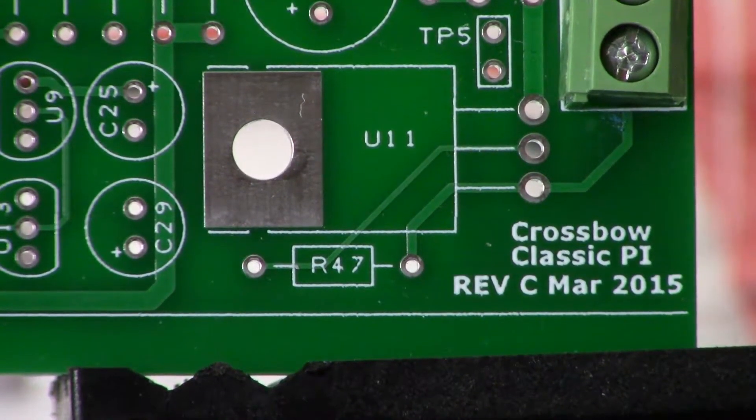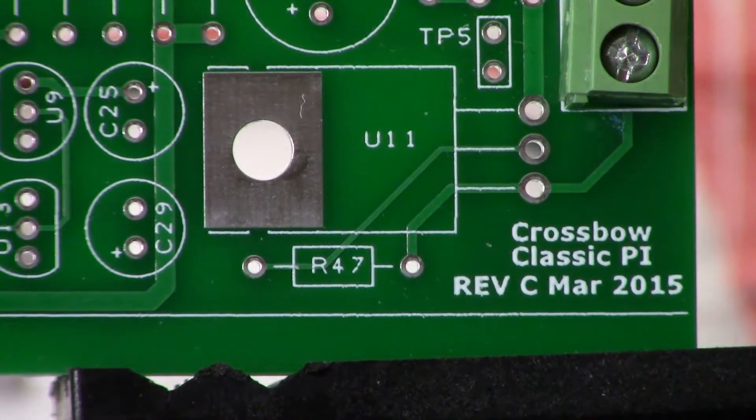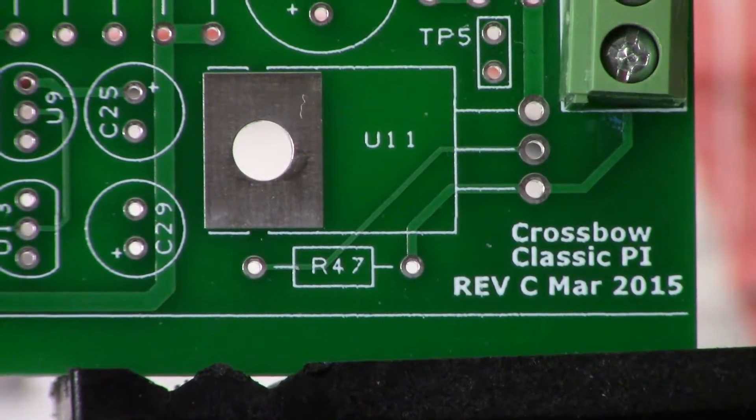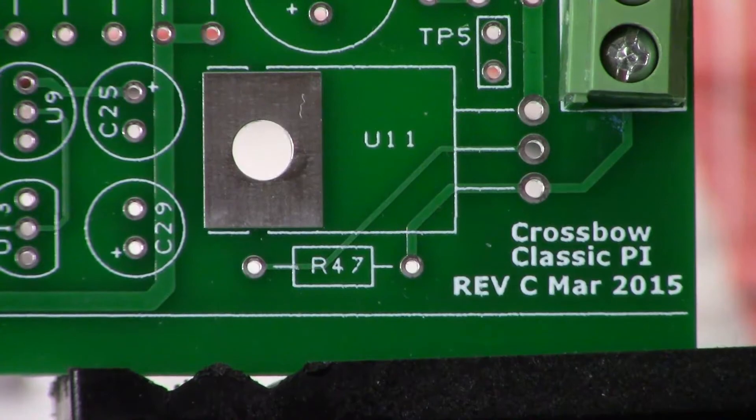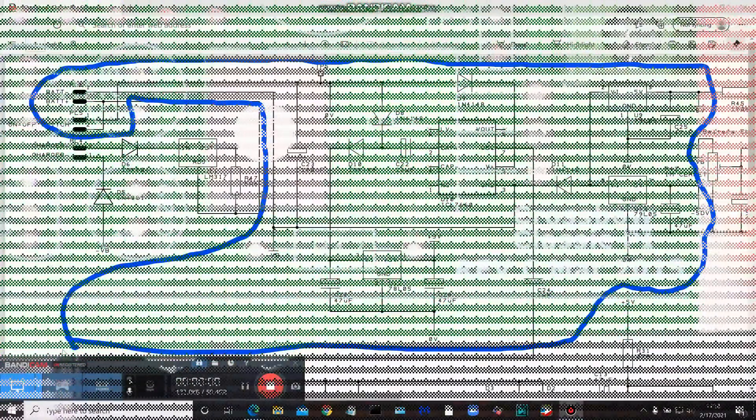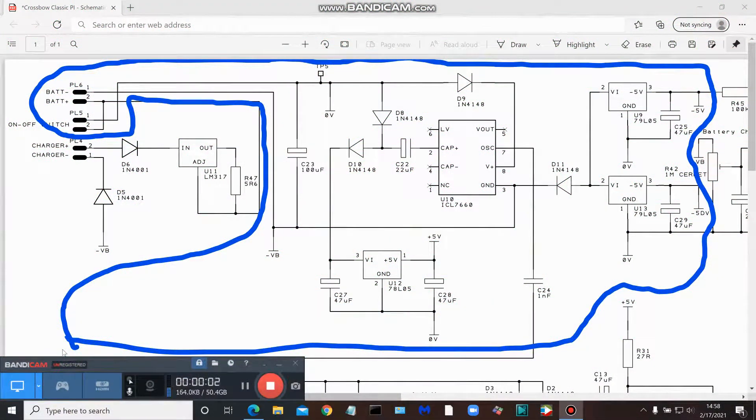Welcome back guys, this is the first installment of a multi-part video series on the building of the crossbow classic pulse induction metal detector. First up will be the power supply. All right, so let's take a very brief look.